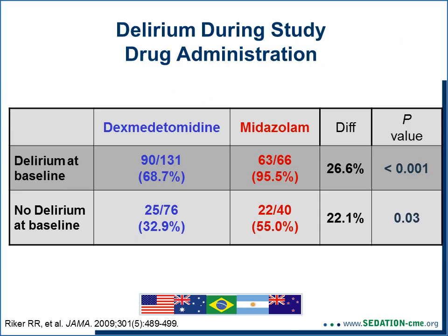Finally, data from the CEDCOM study show that among the 60% of patients who had delirium at baseline, those who received blinded dexmedetomidine had a much lower incidence of delirium during study drug—68% compared to 95% in the midazolam group. Among the 40% who were not delirious at baseline, only 32% who received dexmedetomidine developed delirium compared to 55% with midazolam. It appears that dexmedetomidine both helps delirium resolve more quickly and prevents its development more effectively than midazolam.